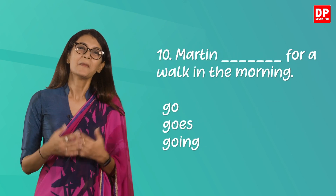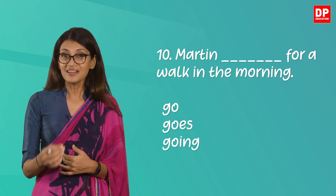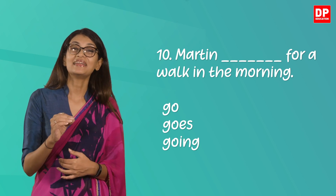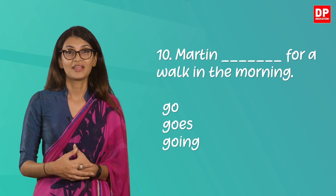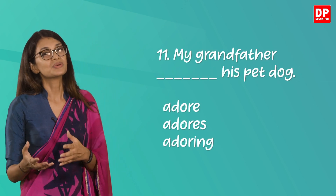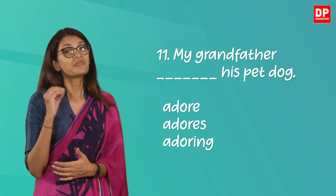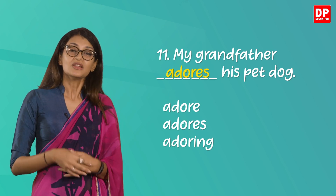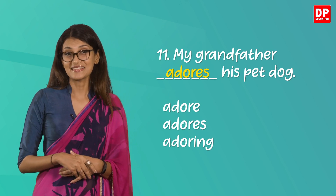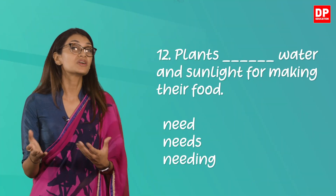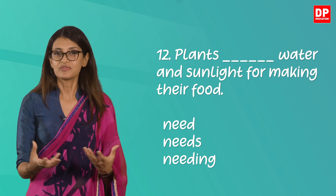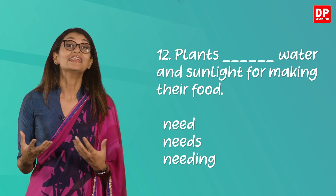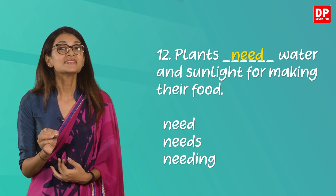Question ten: 'Martin blank for a walk in the morning.' The answer is the second option — note how you add ES to the verb 'go': Martin goes for a long walk in the morning. Question eleven: 'My grandfather adore/adores/adoring his pet dog.' The right answer is 'adores.' To adore something is to love it dearly. Question twelve: 'Plants blank water and sunlight.' This is a general truth and the answer is 'need' — plants is third person plural.